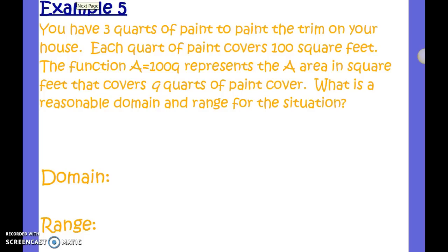Example 5: you have 4 quarts of paint to paint the trim on your house. Each quart of paint covers 100 square feet. The function a equals 100q represents the area in square feet that q quarts of paint covers. What is the reasonable domain and range for this situation? I have to determine my x value to see if this is continuous or discrete. In this problem, instead of x and y, we have a and q. Q is going to be my x value, and a is my y value, because whatever quarts I put in, I get the area covered. So q, my x value, represents quarts of paint.